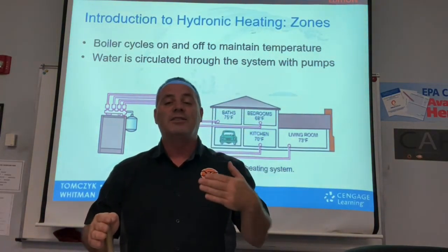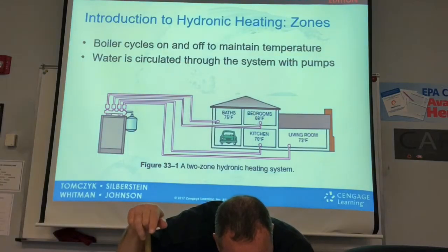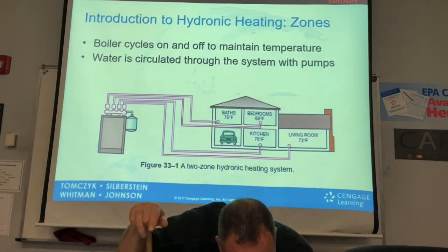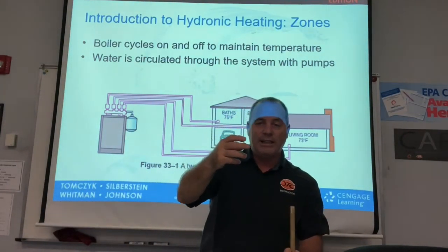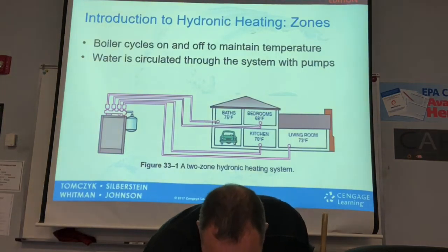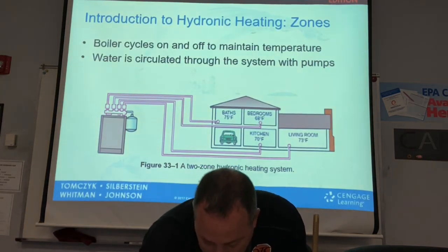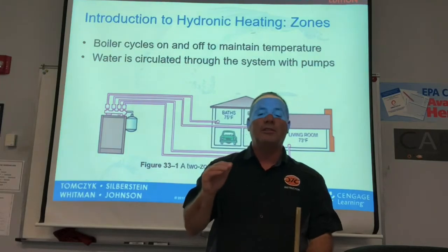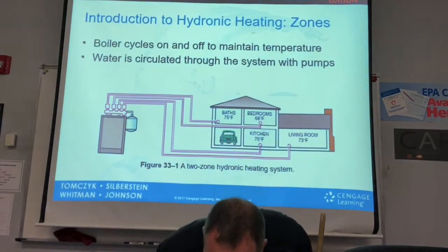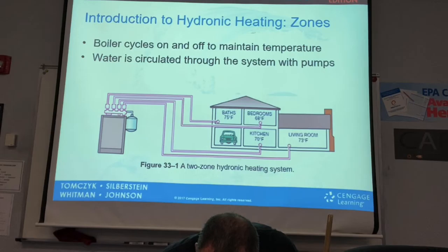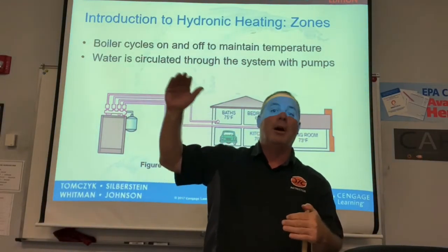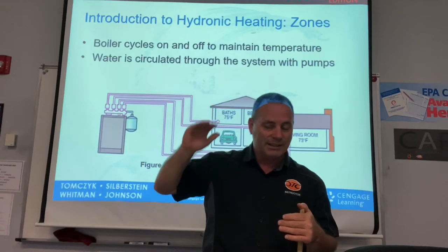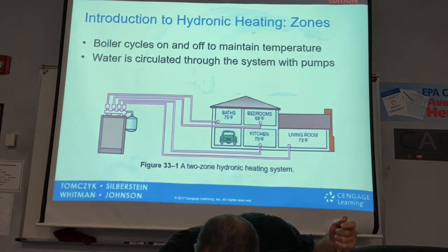The temperature of the water returning to the boiler affects its operation, as well as the process of removing flue gases. As the return water temperature decreases, the flue gas temperature can drop below 130 degrees, causing it to condense. Most conventional boilers are designed to operate with a flue temperature above 130 degrees — above the dew point — so they do not condensate.